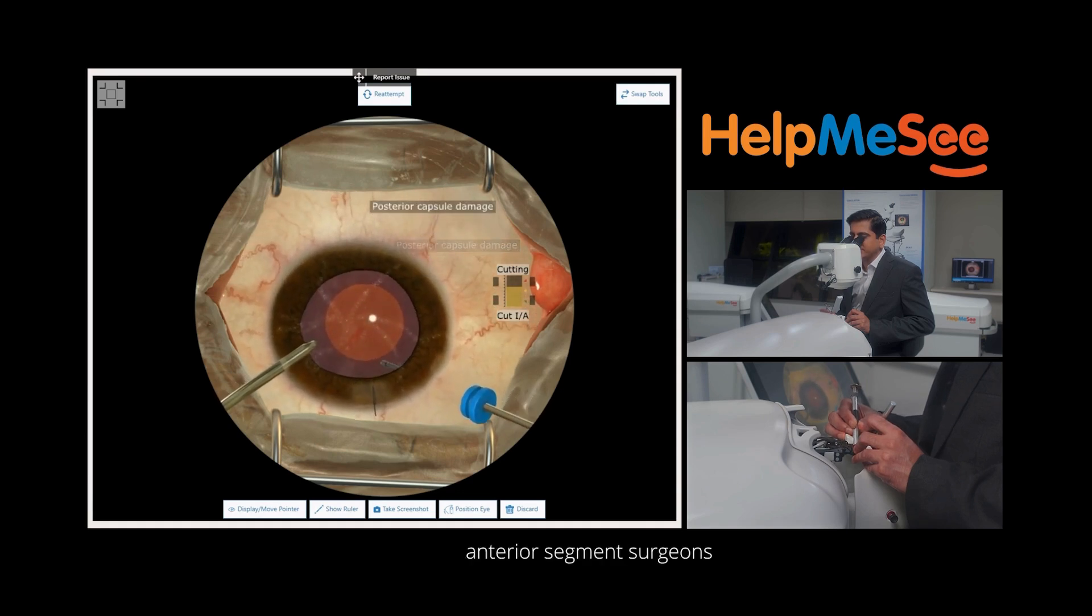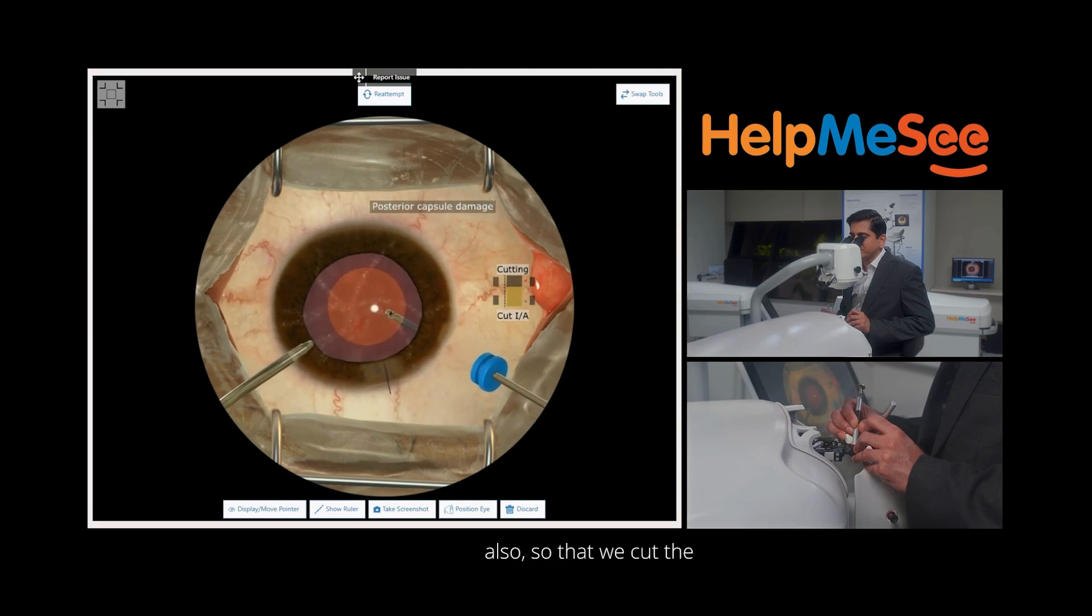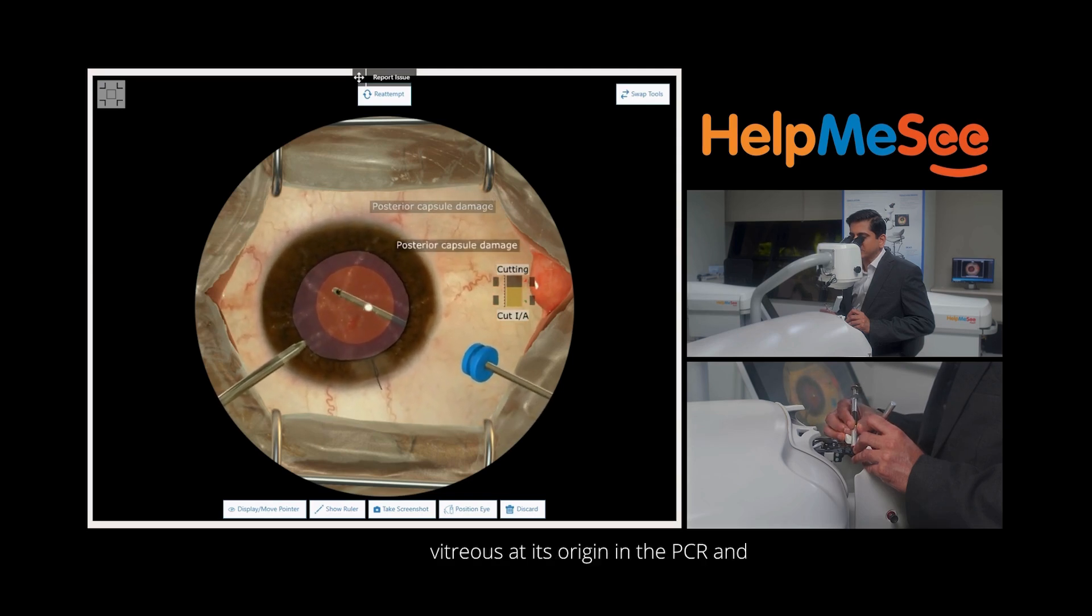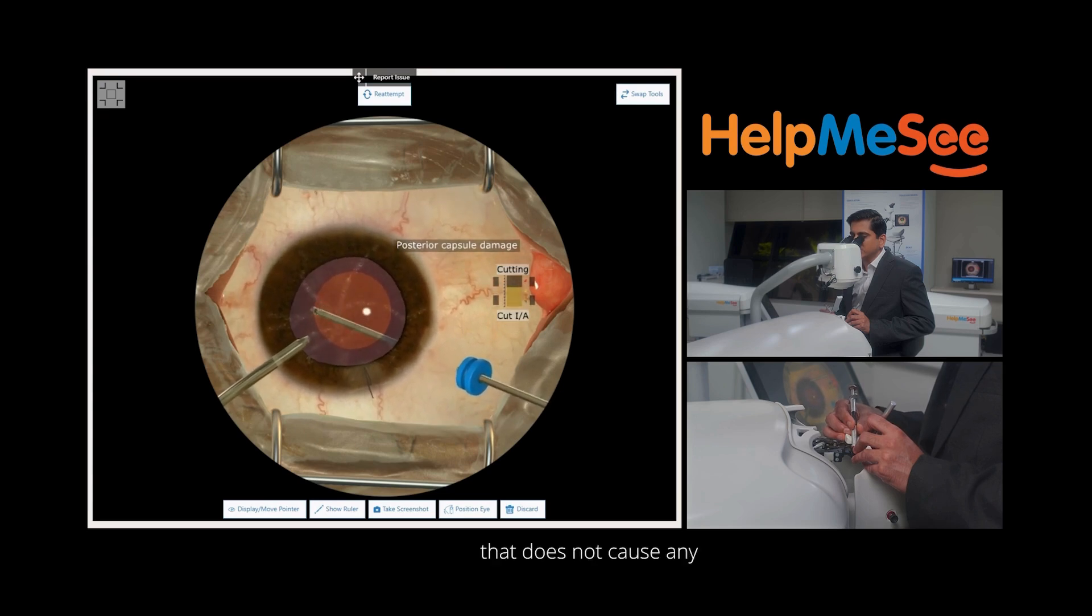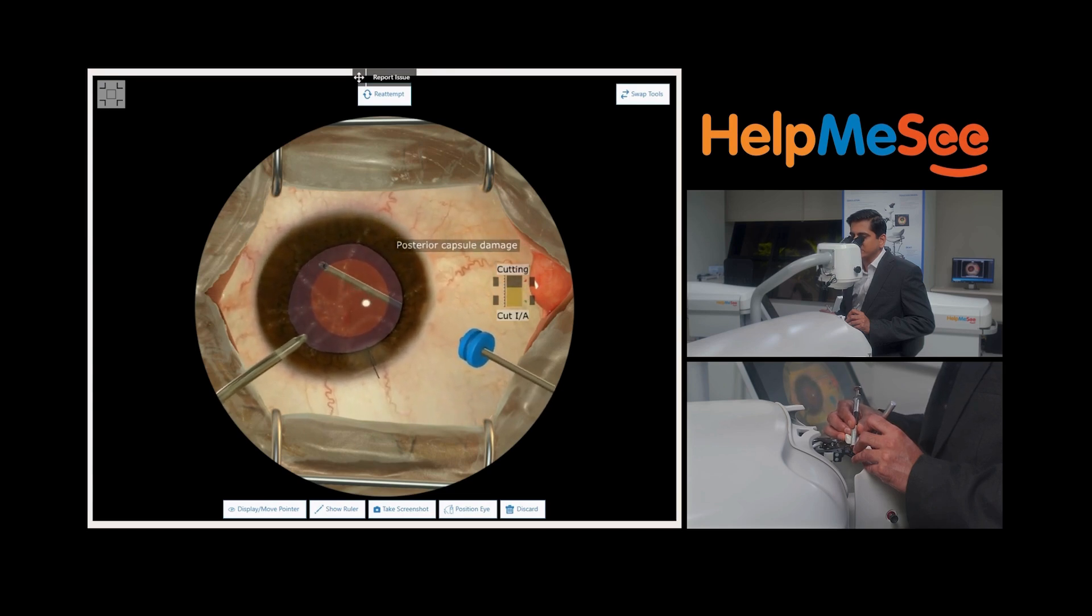This parasynthesis route is important for anterior segment surgeons also so that we cut the vitreous at its origin in the PCR and that does not cause any further damage or traction on the retina.